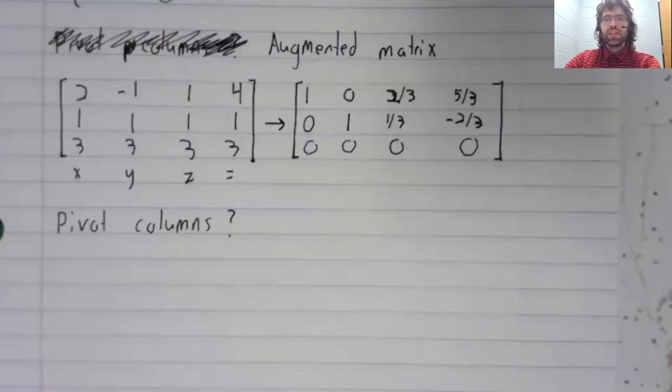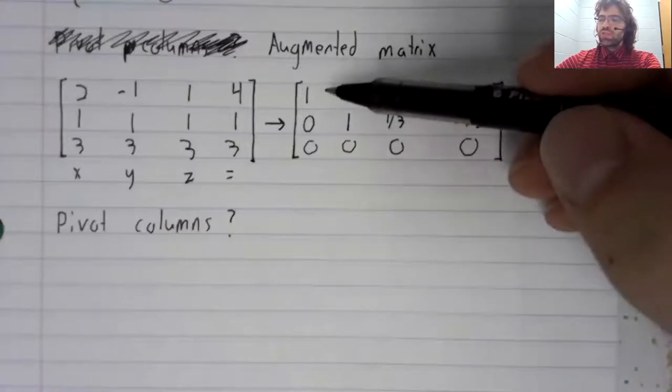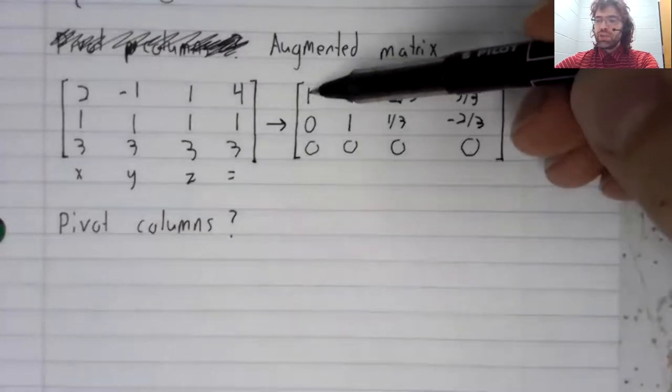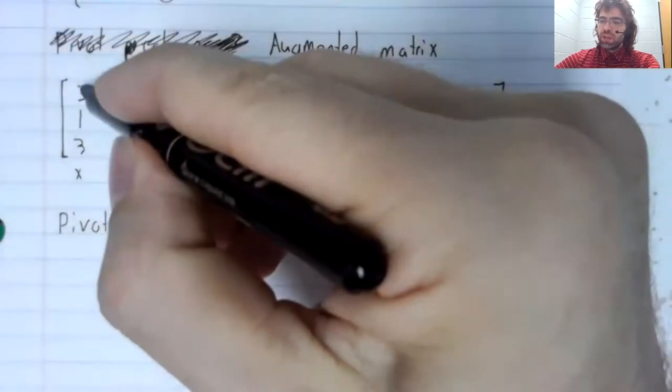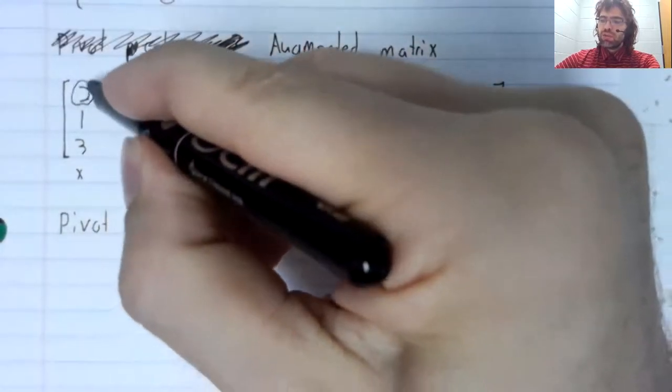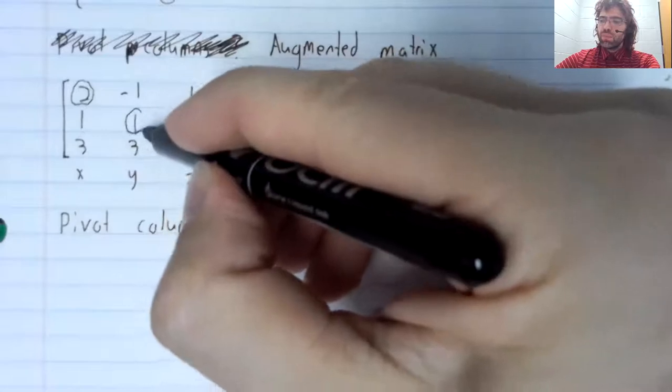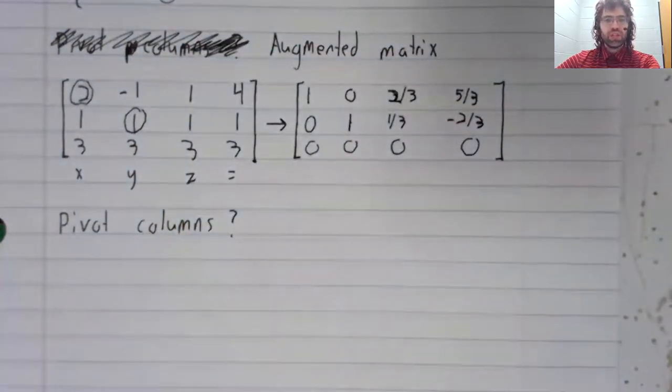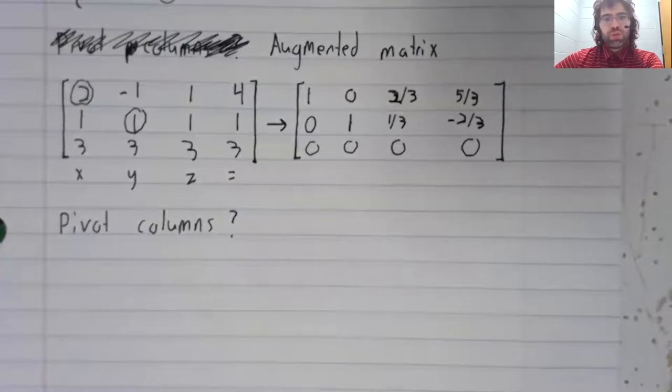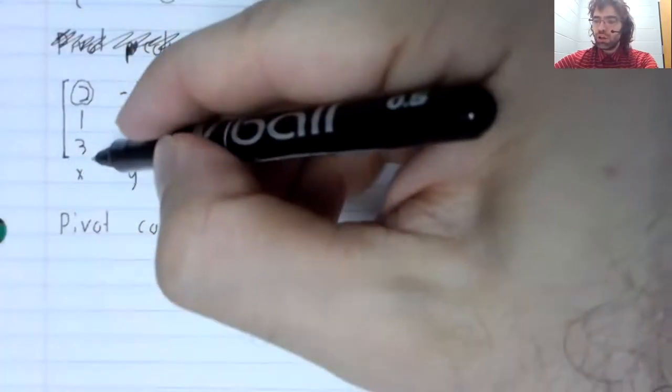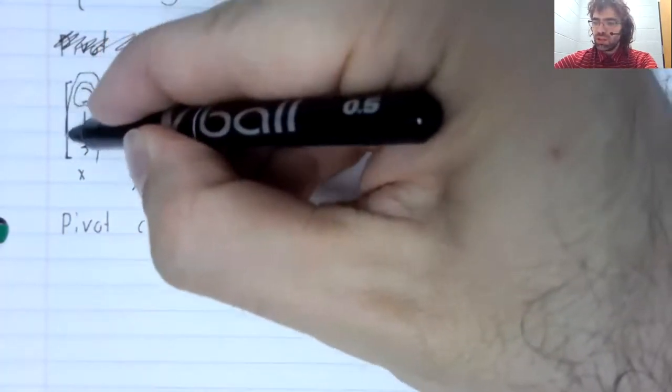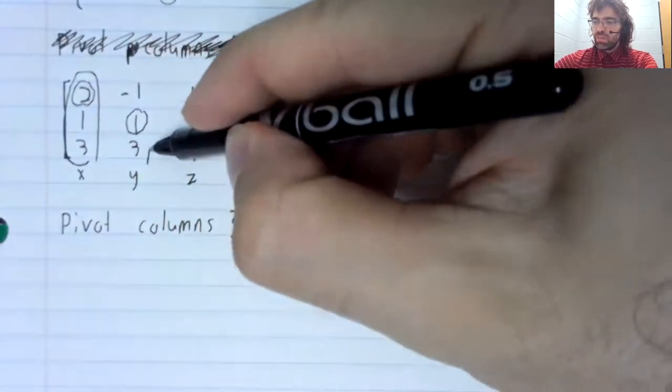I did that off camera. And now you can see we have a leading entry here and a leading entry here. That tells you where the pivot positions are in the original matrix, which therefore tells you where the pivot columns are.